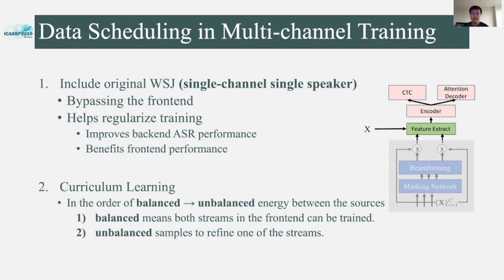We also applied a curriculum learning strategy to further enhance the training. We sorted the spatialized WSJ1-2Mix data in order from balanced to unbalanced energy between the two source speech signals. When the energy is balanced, the two separated streams have similar energy, so both streams in the frontend can be trained moderately. Later, the unbalanced energy samples, where one source is much clearer than the other, are used to refine the training.